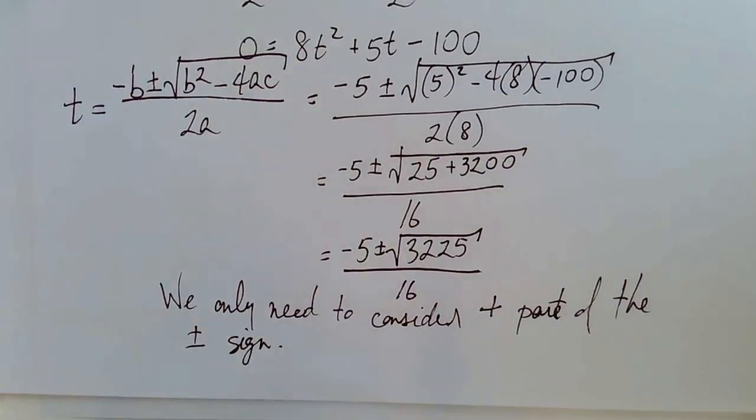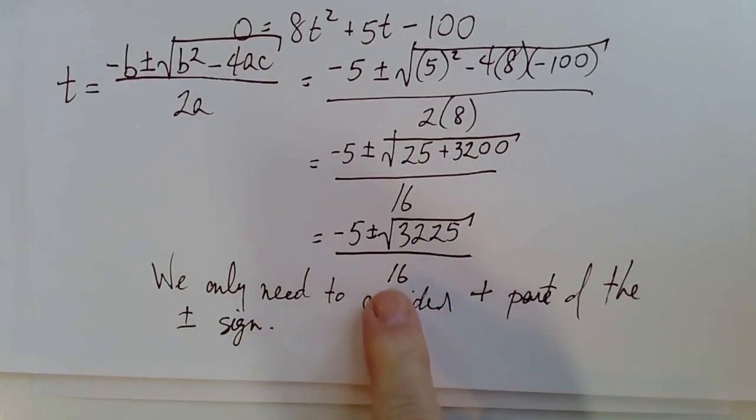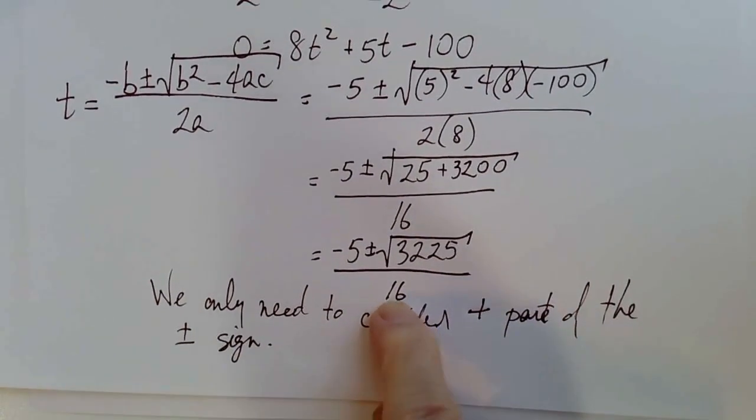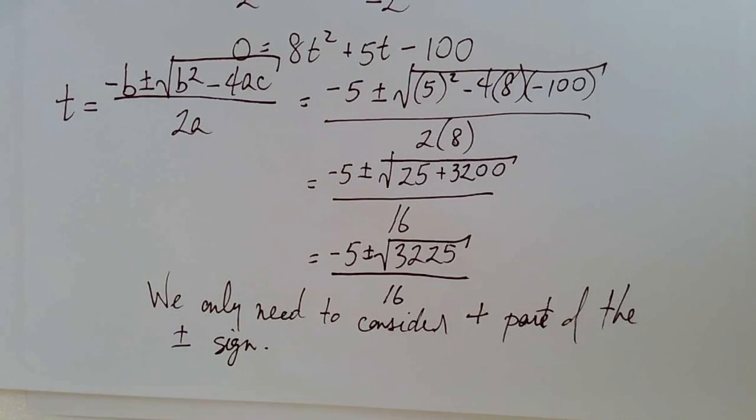And we can see that more clearly because a in the denominator here is positive. If a had been negative, we would need to wait to make this determination. Well, let's see.